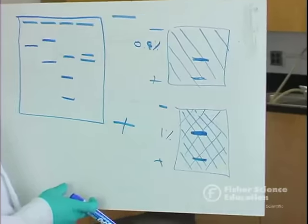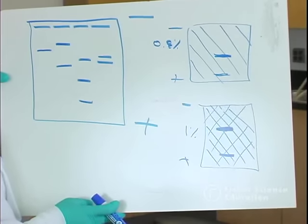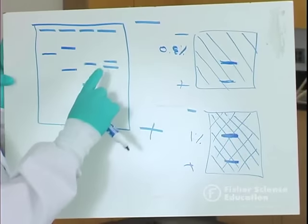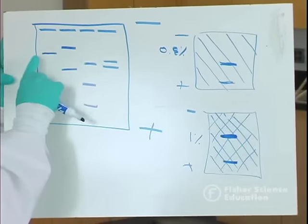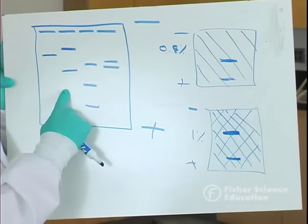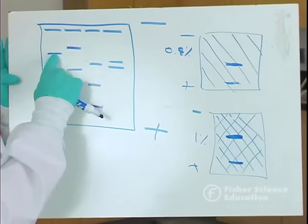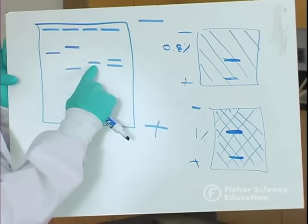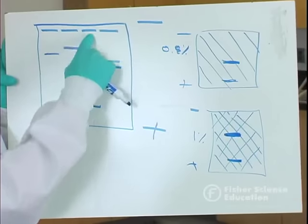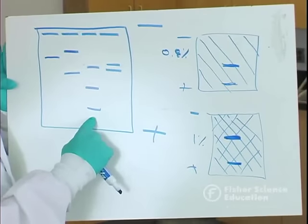In a real-world context like a paternity test, you would compare bands to find matches. If this lane is the child and this is the mother, you would look at two possible fathers and determine who matches. You can see here this maternal band matches, and this paternal band matches with no match in the other lane. So lane 3 here would be the most likely candidate for the father.